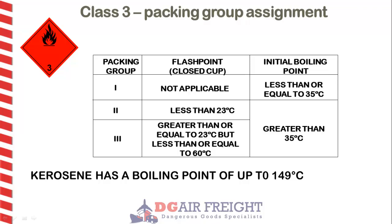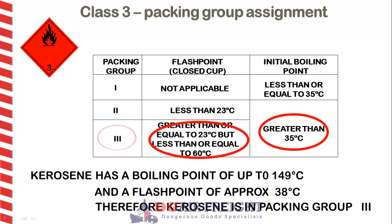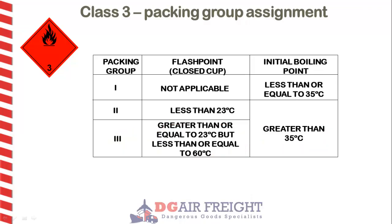Kerosene has an initial boiling point of up to 149 degrees Celsius and a flashpoint of 38 degrees Celsius, so it falls into packing group 3, which is low danger.